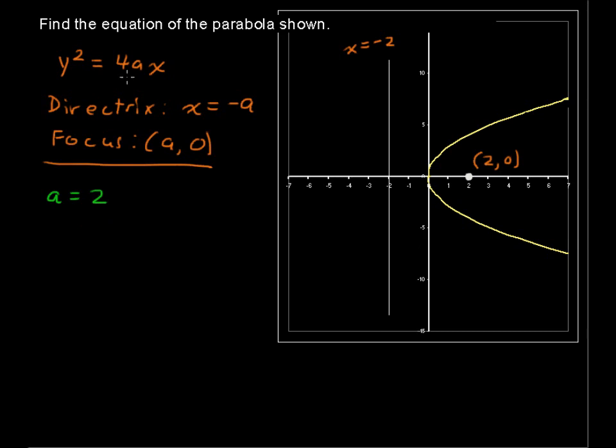So we can just write this out. y squared equals 4 times, put in the 2, times x, and y squared equals 8x.